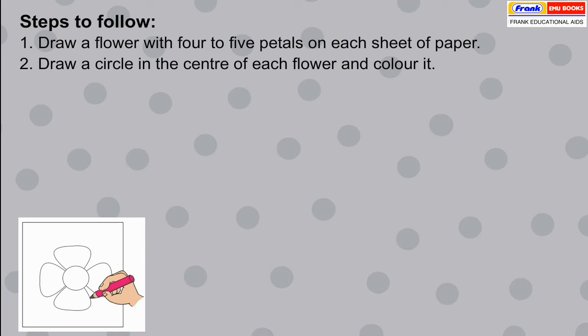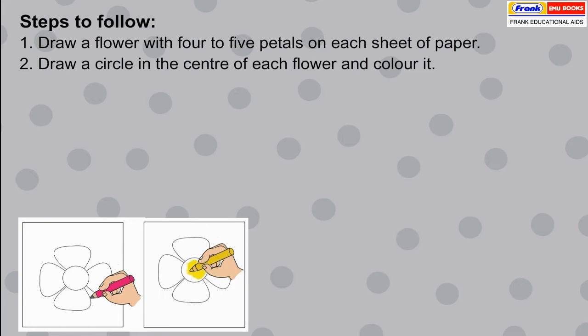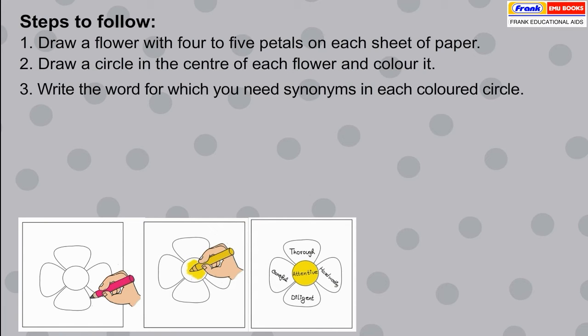Draw a circle in the center of each flower and color it. Write the word for which you need synonyms in each colored circle.